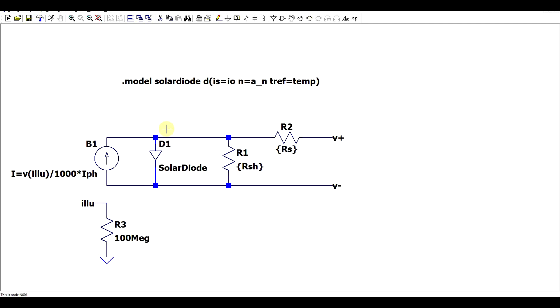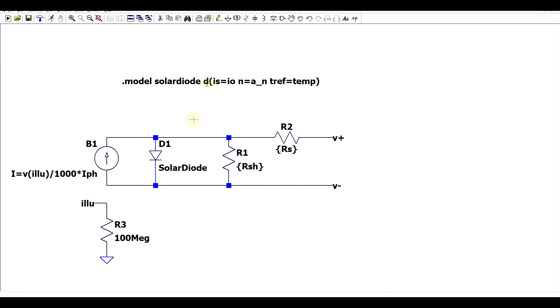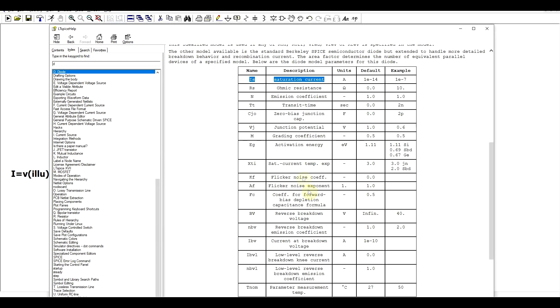And finally for the diode I'm using the built-in diode model in LTSpice and this will be using three parameters. On the one side we have the IO parameter which is attributed to the built-in saturation current. Then our ideality factor and number of cells will be used as a single parameter attributed to N which is the emission coefficient.